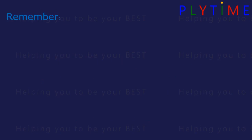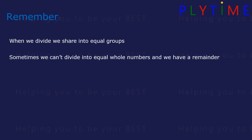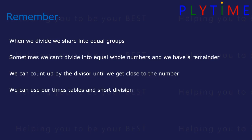Remember, when we divide, we share into equal groups. Sometimes we can't divide into equal whole numbers, and we have a remainder. We can count up by the divisor until we get close to the number. Or we can use our times tables and short division. It really helps to know your times tables when doing division. I'll see you next time.